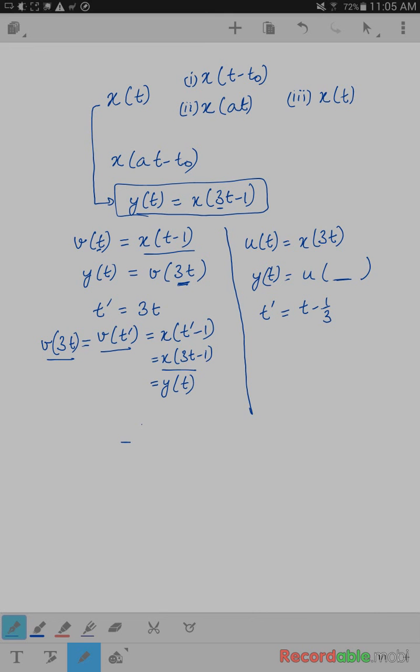So now if I take u of t prime, it is equal to x of 3 times t prime, right? 3 times t prime, which is equal to x of 3 times t minus 1 over 3, which is again x of 3t minus 1, right?